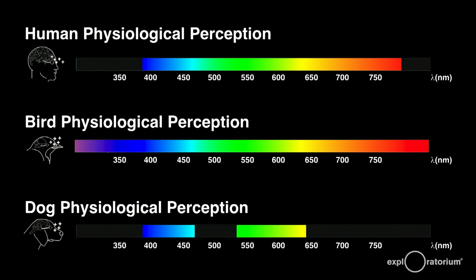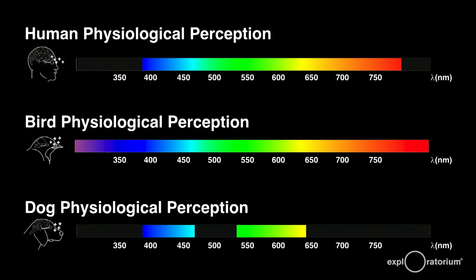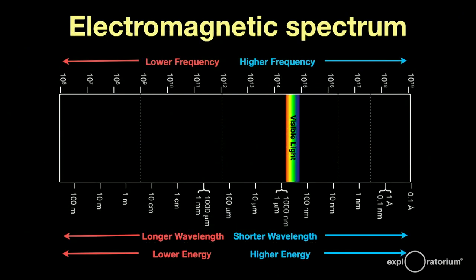Just because our human perception only covers red to violet doesn't mean that other species perceive the same thing. Birds have a somewhat wider range, and dogs substantially less range. We may only see one octave, but the piano is very large.